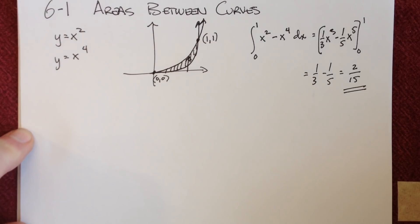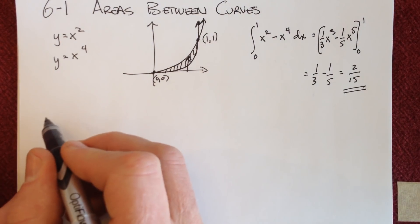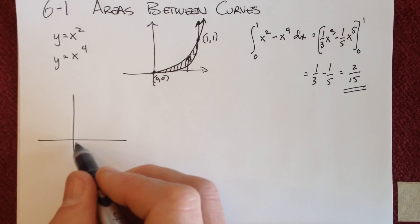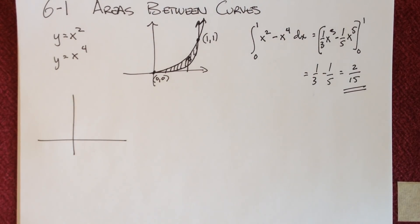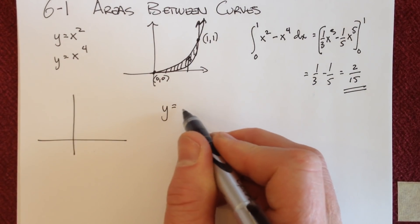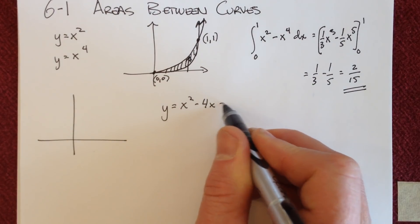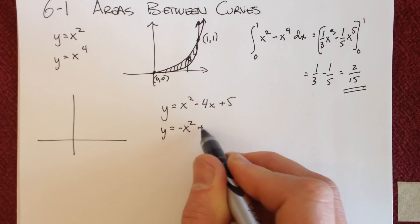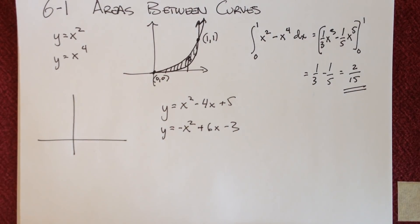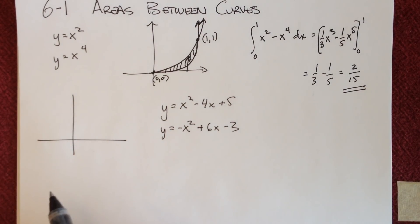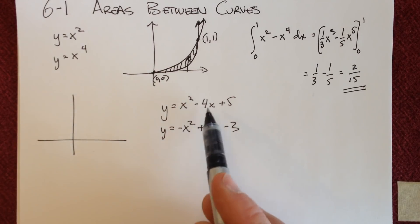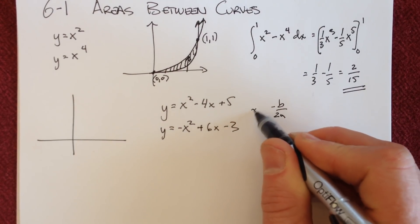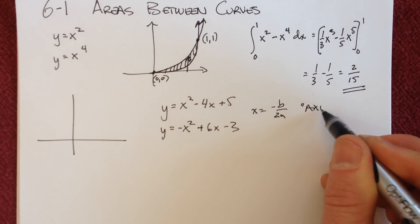It's not always that simple. A more difficult example would be two parabolas that trap some area, and we need to do a little solving first. Let's try y equals x squared minus 4x plus 5, and y equals negative x squared plus 6x minus 3. If you're trying to find the area between these two curves, sketch them out. You can use the negative b over 2a formula for the axis of symmetry — very handy to know.